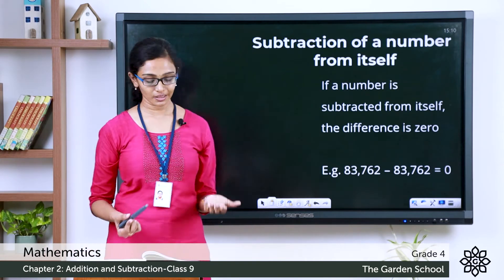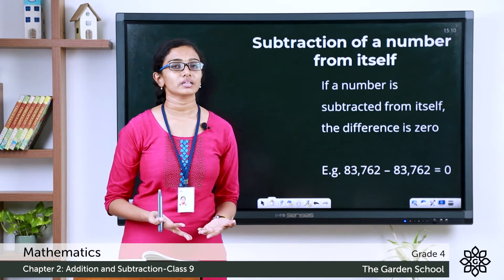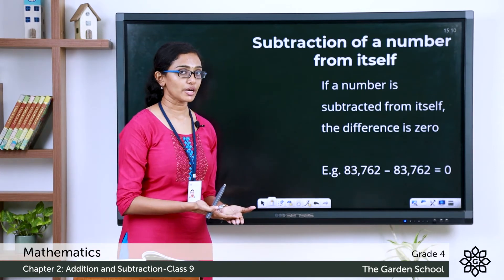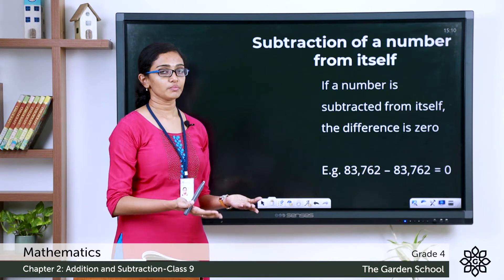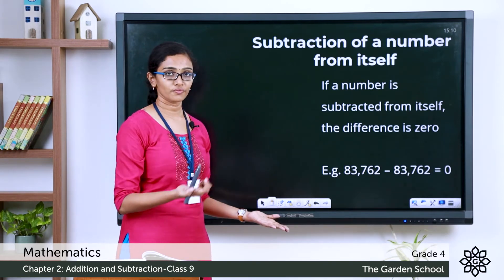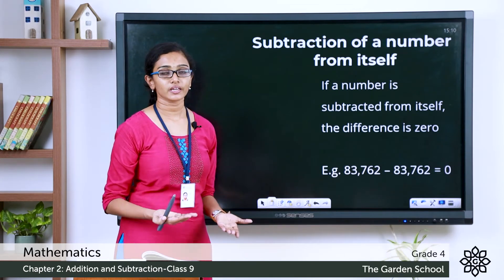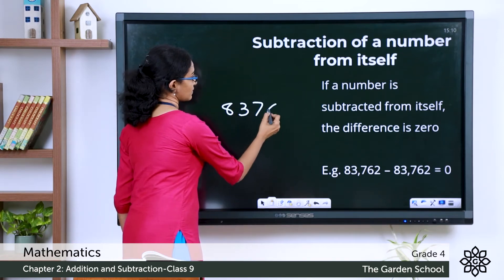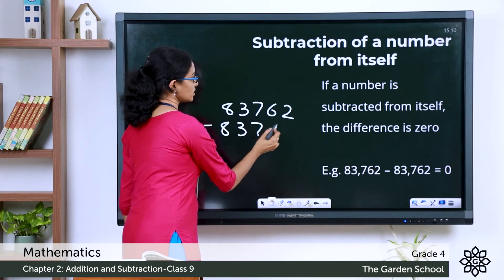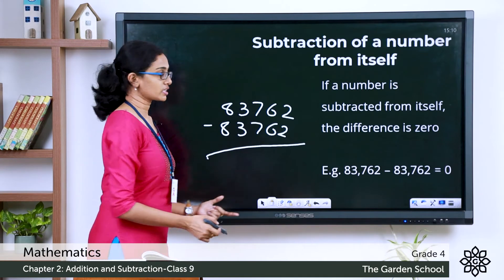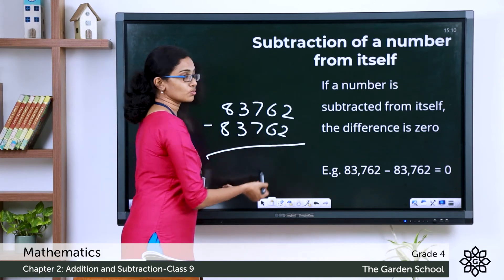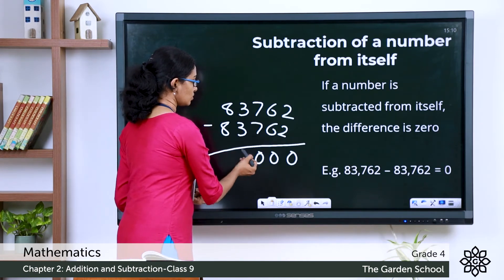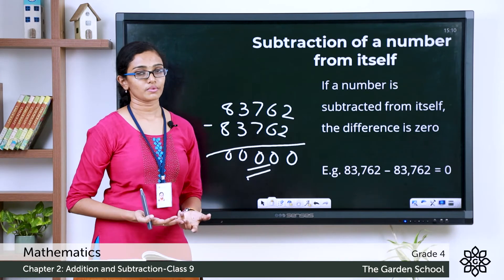The third property says that when you subtract a number from that number itself, the result will always be 0. For example, 5 minus 5 means you are taking away the whole 5 from the given 5 — nothing is left. Here is one more example: 83,762 minus 83,762. Subtracting each digit: 2 minus 2 is 0, and so on — all zeros.